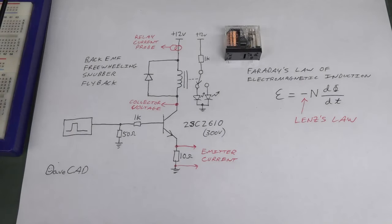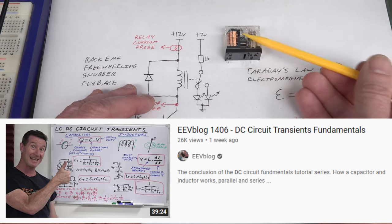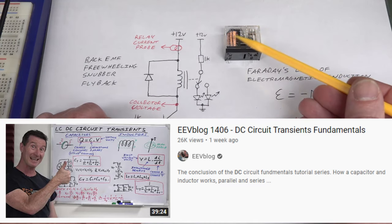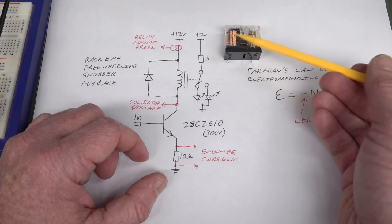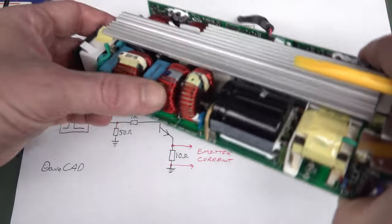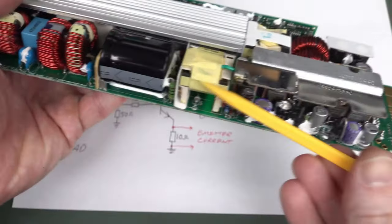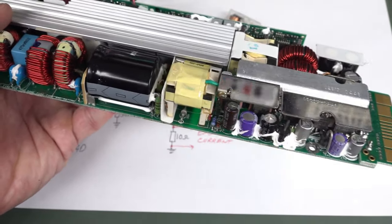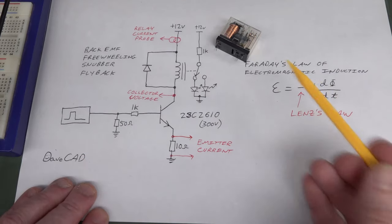In a previous tutorial video on DC circuit transients, we took a look at capacitors and inductors and how they store energy. Capacitors store energy in a dielectric material using an electric field. Inductors, like those used in relays, store energy in the magnetic field in the coil and any ferrite or high permeability material used at the core. These are all magnetic inductive components.